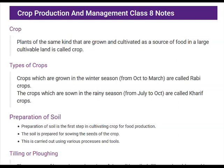Rabi crops are grown in the winter season, from October to March, whereas Kharif crops are grown mostly in the rainy season, from July to October. But are these crops the same throughout the country? No. The type of crops grown in different parts of the country vary according to the climate, the soil, and the rainfall they receive.